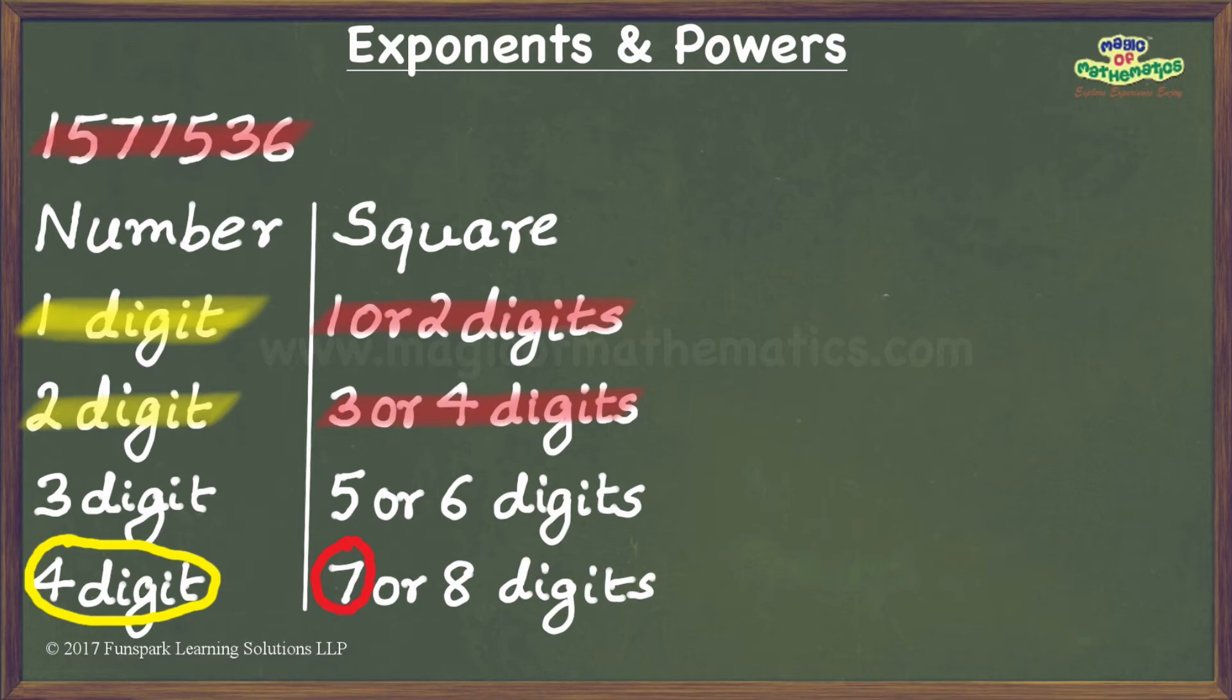It is clear that this table can be used to find the number of digits in the square root of any perfect square. However, every time we are presented with such a problem, it may not make sense to create such a table. Hence, we need to translate our findings into an easy method.